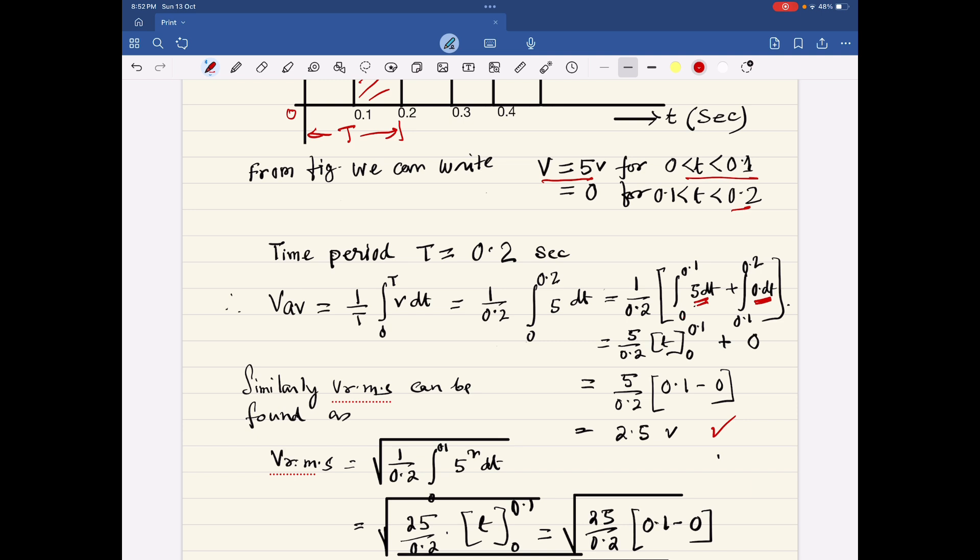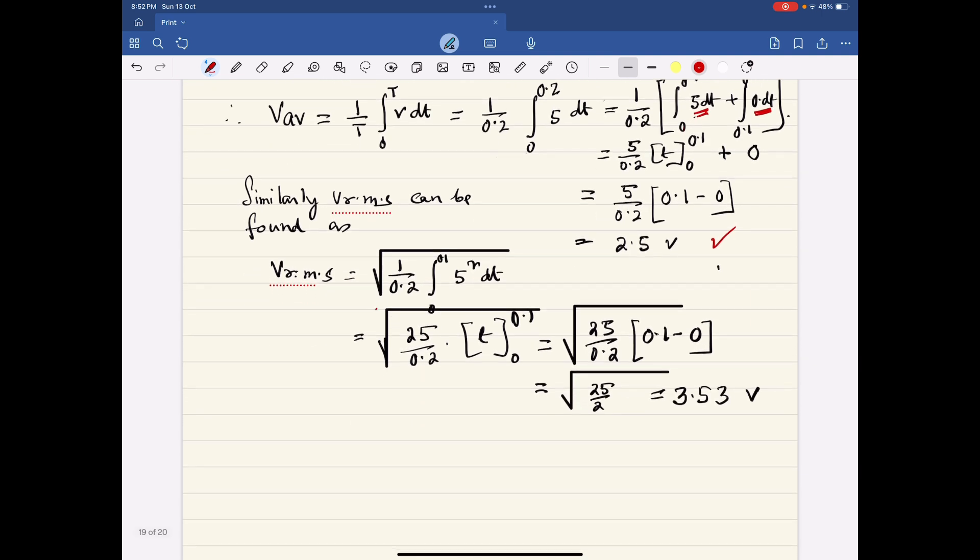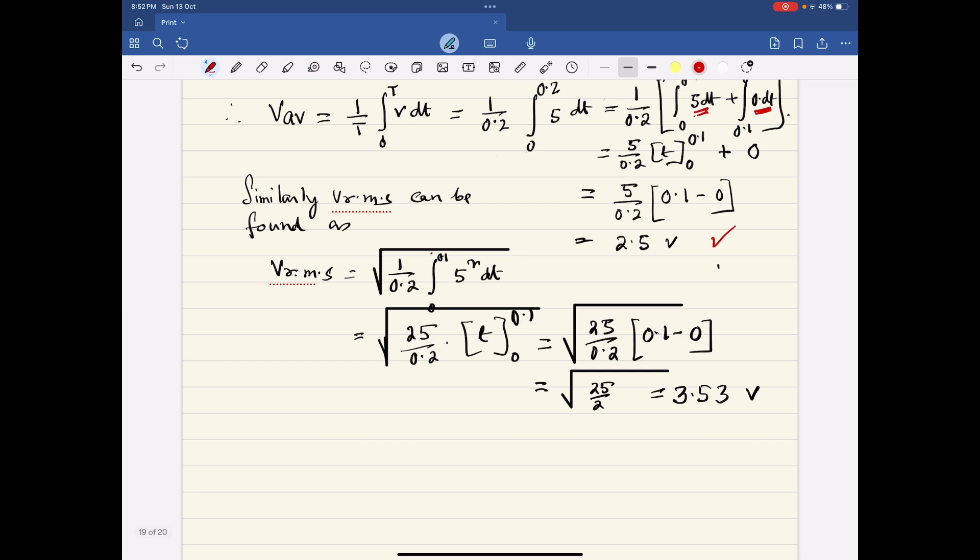We will find out the V rms. V rms is similarly, this is under square root. This is 1 by 0.2, 0 to the limit is 0 to 0.1, it is 5 square dt. So 25 by 0.2 and T is 0 to 0.1. Ultimately we are getting 3.53.